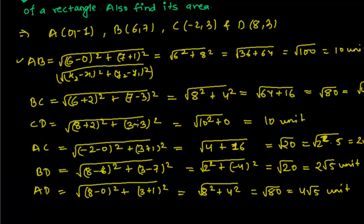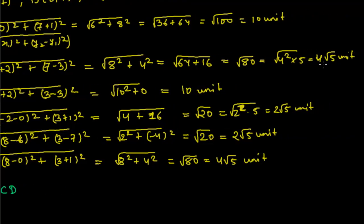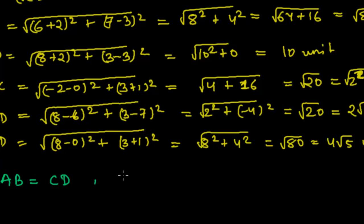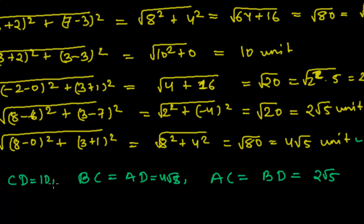Now let's compare the values. AB = CD = 10 units. BC = AD = 4√5. And AC = BD = 2√5. So the opposite sides are equal, which means this could be a parallelogram. But to confirm it's a rectangle, all angles must be 90 degrees.